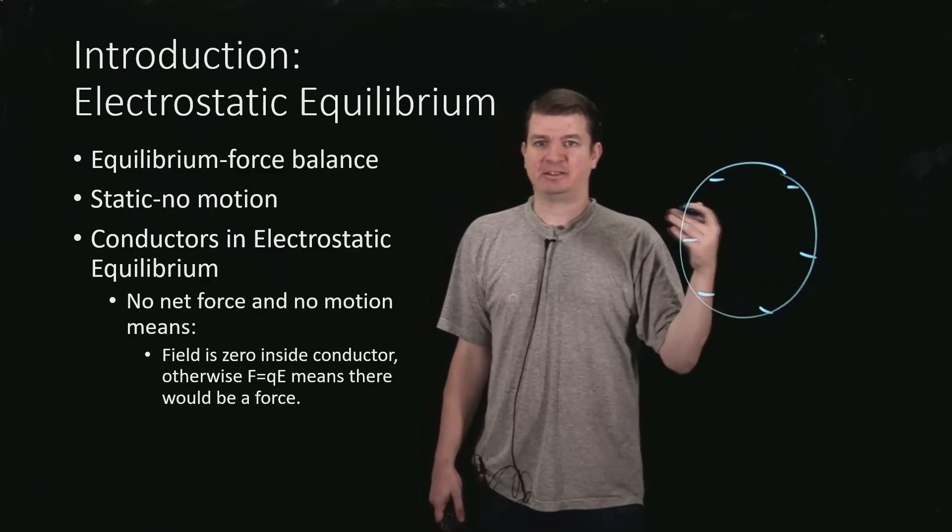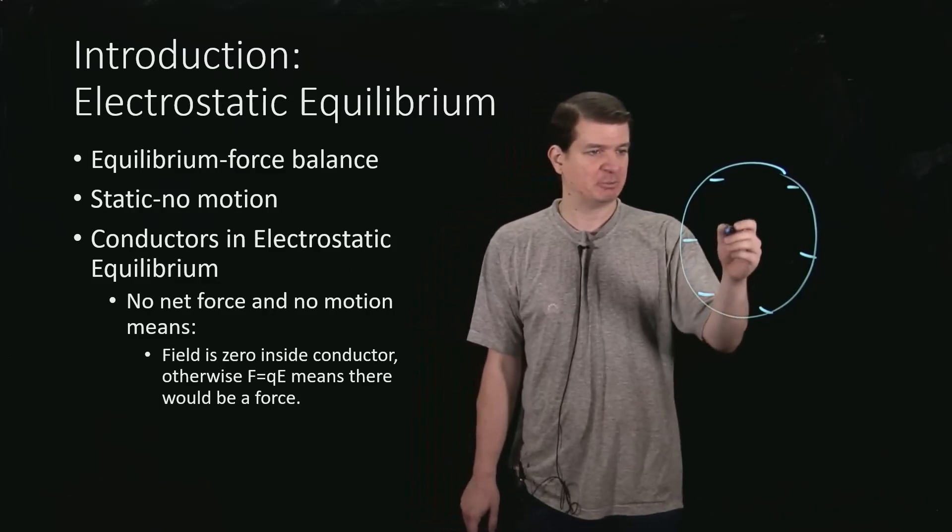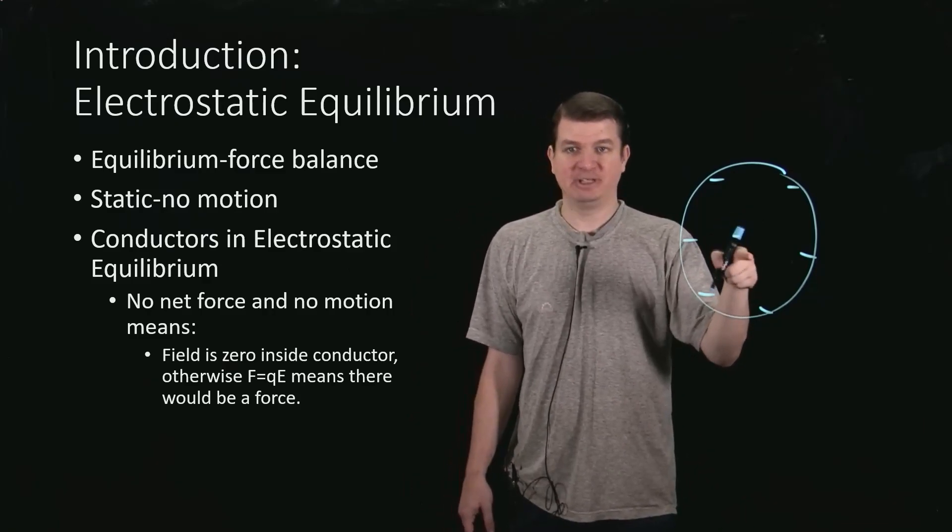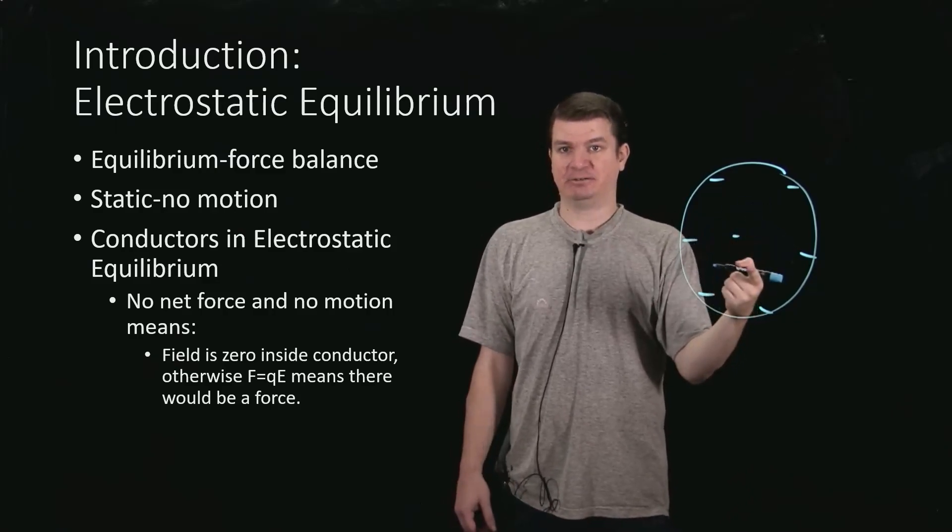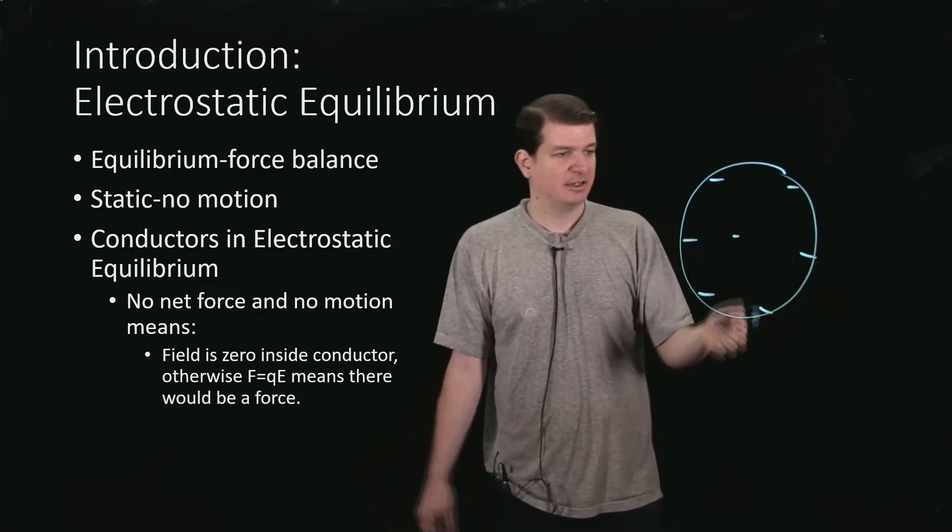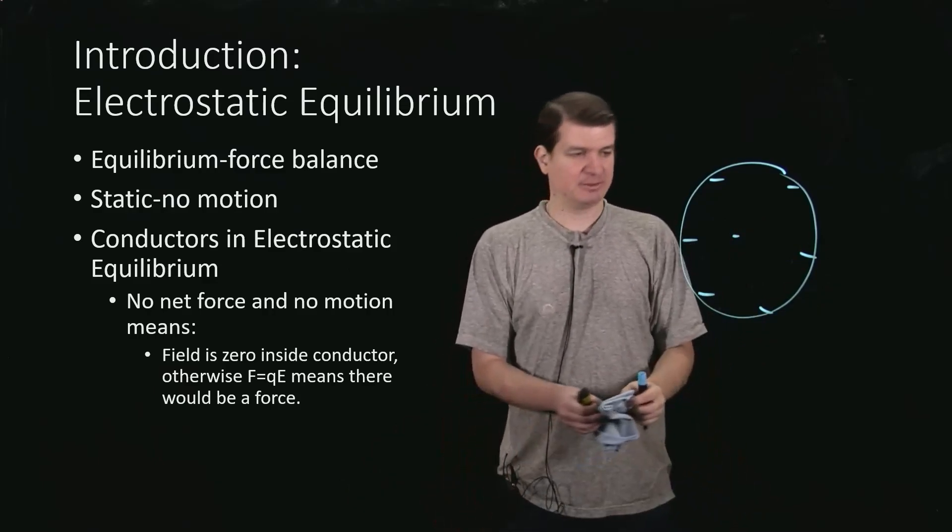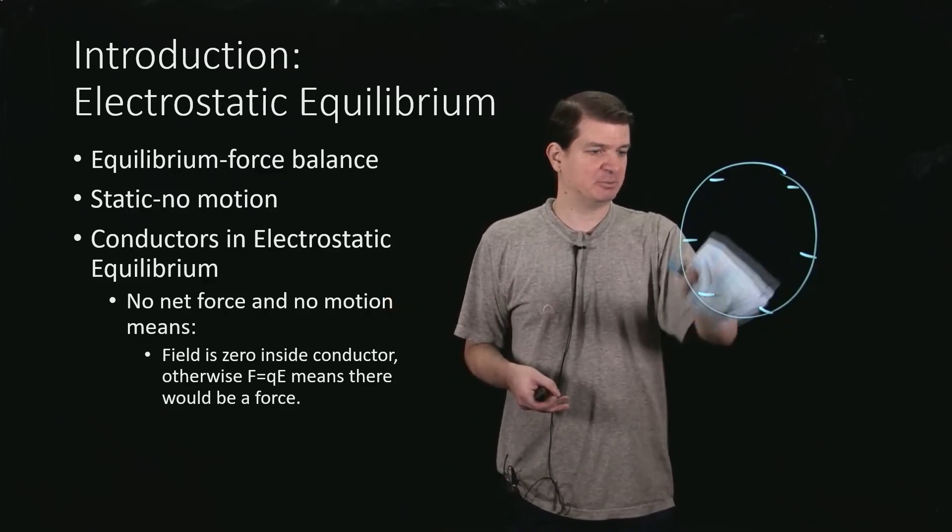then remember that there was a force due to that field, which is just my test charge, so if I plopped out another electron in here, and there's actually a force or a field present, then the force on that electron is just the charge of the electron times the field, and it's got a force, and there's nothing to oppose it, then it would move. So that field had better be zero, otherwise I've not got electrostatic equilibrium, because we said the charges weren't moving.